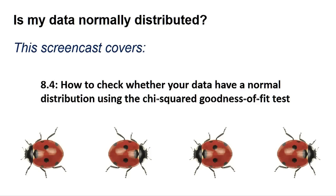Thus, researchers often like to do tests to determine if the data is normal, and we will outline some in this screencast. Please note that absolute justification that a small data set is normally distributed is almost impossible to do.